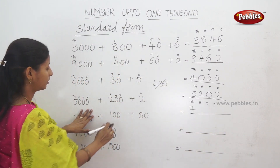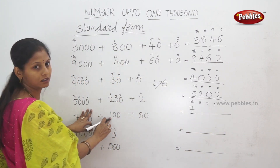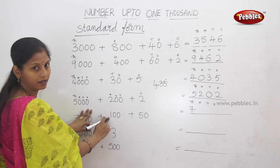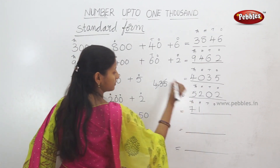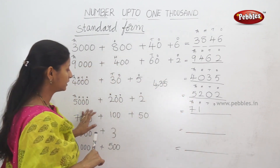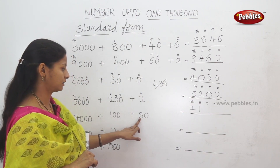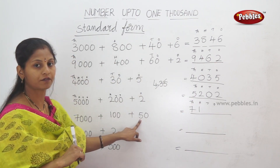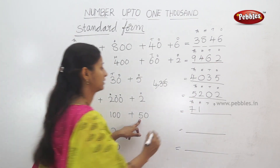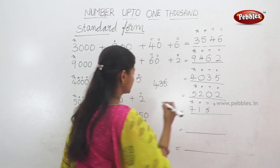Next number: ones, tens, hundreds. One hundred. So, hundreds place is 1. Next: ones, tens. Tens place — what is it? 5 tens. 5 tens.